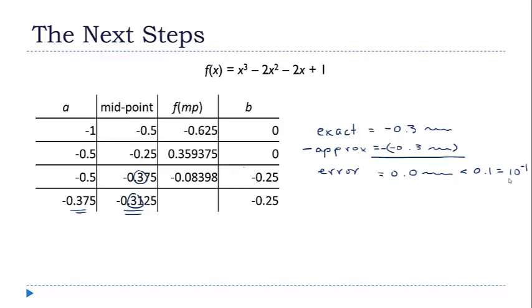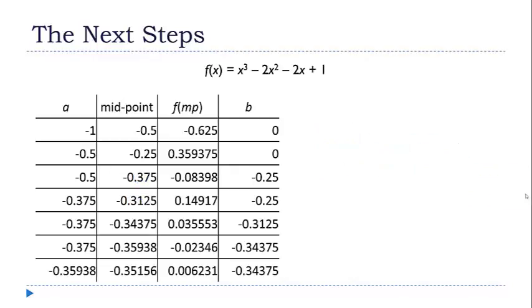Suppose we need something a little better. Suppose we needed an error that was less than 0.01 or 10 to the negative second. In this table I've worked out the next three rows, and if you compare the approximations in the last two, you'll see that they have the same last two decimal digits. This tells me that I can be sure the exact value starts with negative 0.35. So that approximation is going to be accurate to within 10 to the negative second.